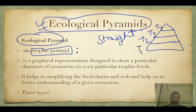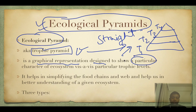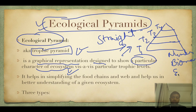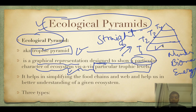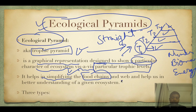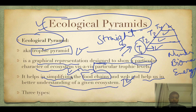It can show number, biomass, or energy with respect to a particular trophic level. These are the three characters it can show. It helps in simplifying food chains and food webs and helps us better understand a given ecosystem. It is basically of three types.